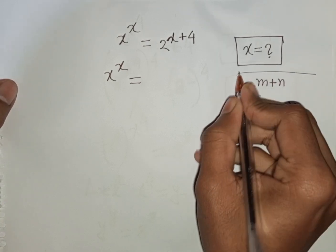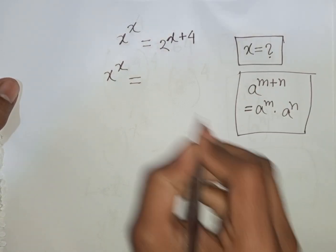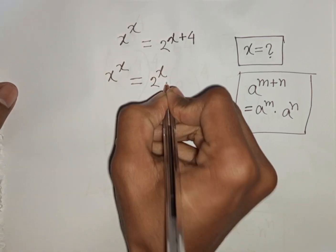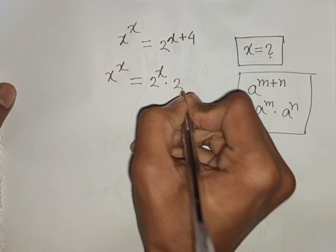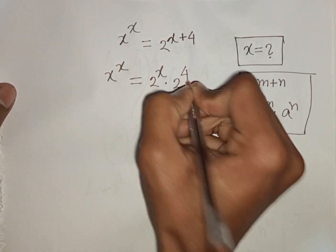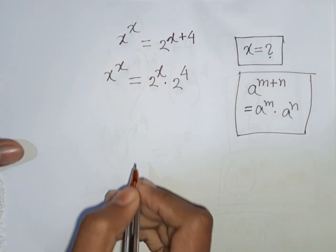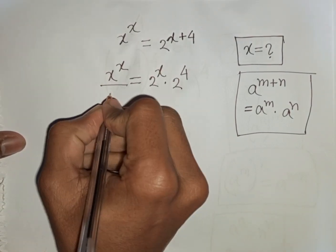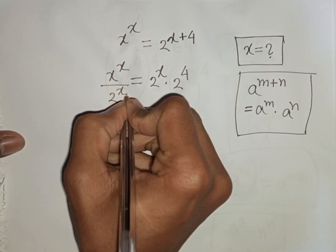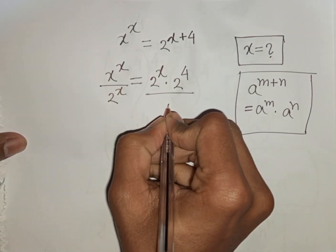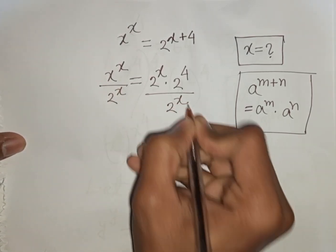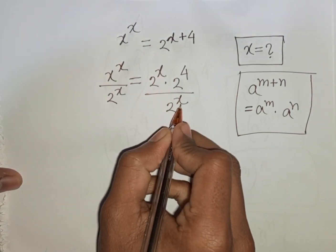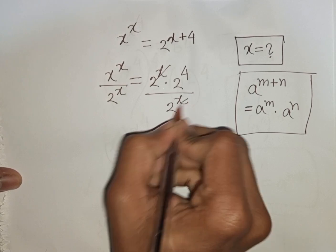According to this formula, you can write here: 2 power x times 2 power 4. Now, we divide by 2 power x on both sides, so 2 power x divided by 2 power x — this 2 power x will be cancelled.